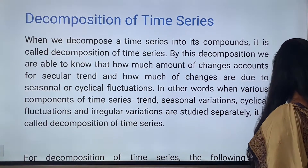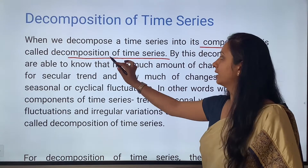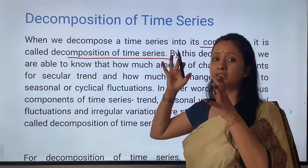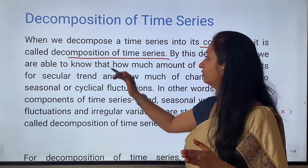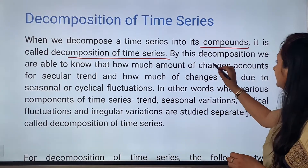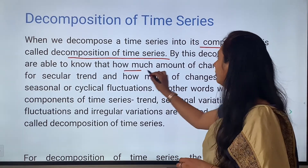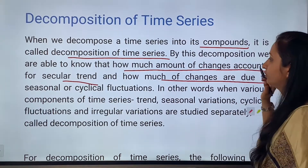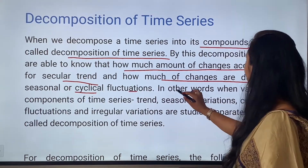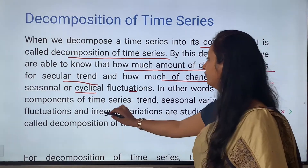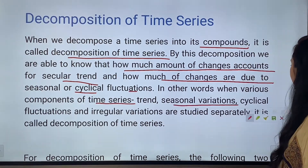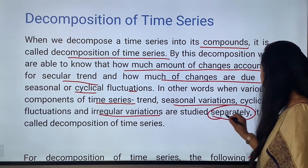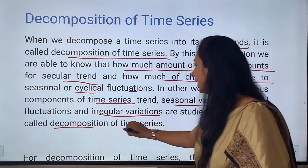Decompose a time series into its components — this is called decomposition of time series. By this decomposition, we are able to know how much of the changes account for secular trend, and how much of the changes are due to seasonal or cyclical fluctuations. In other words, when various components of time series — trend, seasonal variations, cyclical fluctuations, and irregular fluctuations — are studied separately, it is called decomposition of time series.